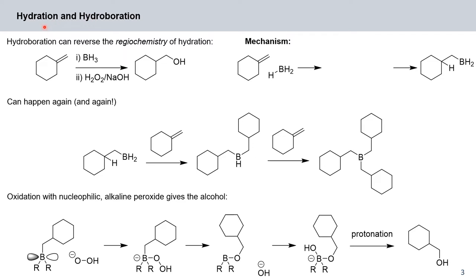We've seen that acid-catalyzed hydration of an alkene gives you the more substituted alcohol. Hydroboration, on the other hand, can reverse the regiochemistry of hydration. Here we have our alkene methylene cyclohexane, and we react it first with borane BH₃, then after workup with hydrogen peroxide and sodium hydroxide — giving alkaline peroxide — we get the less substituted, primary alcohol.